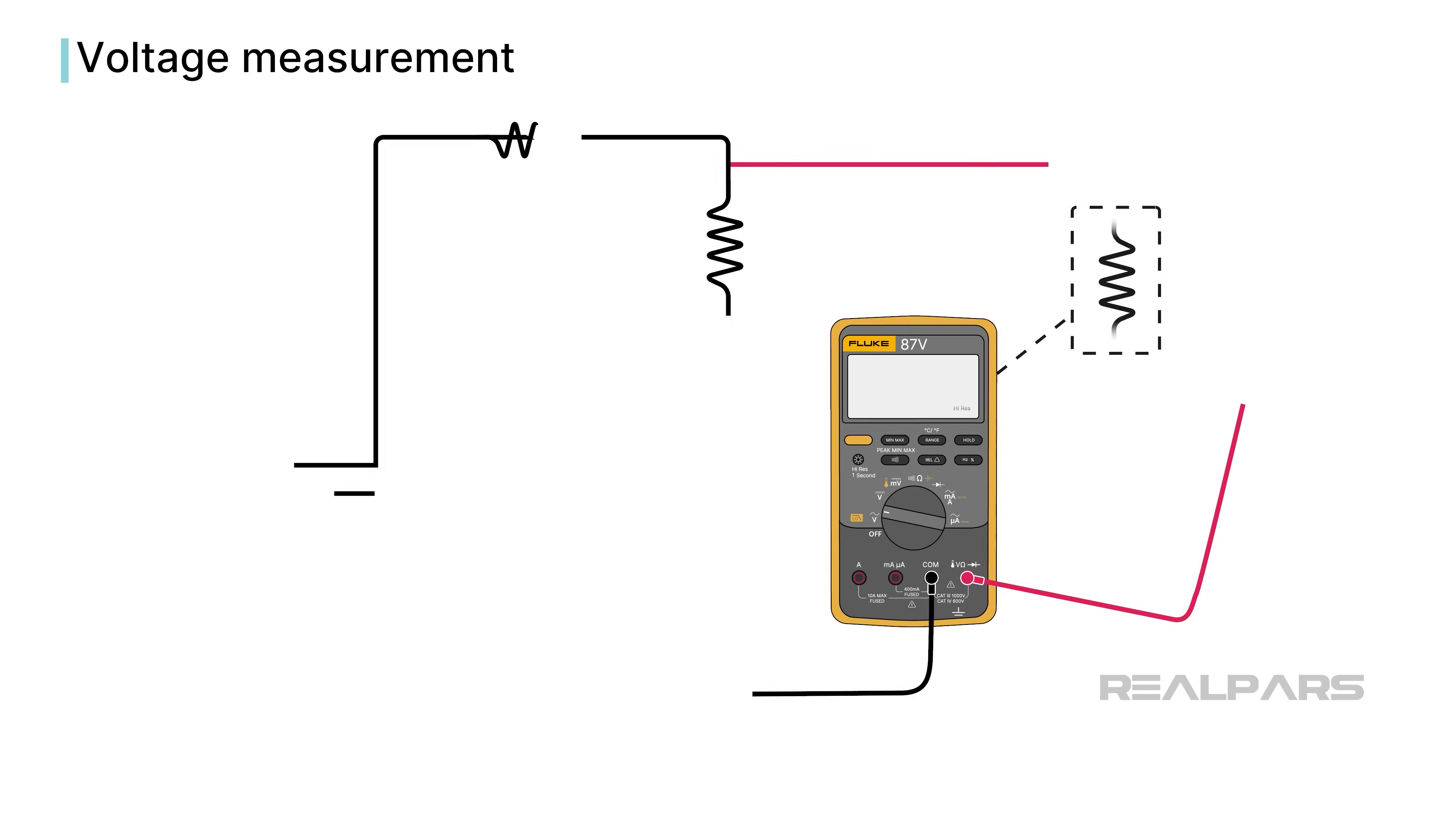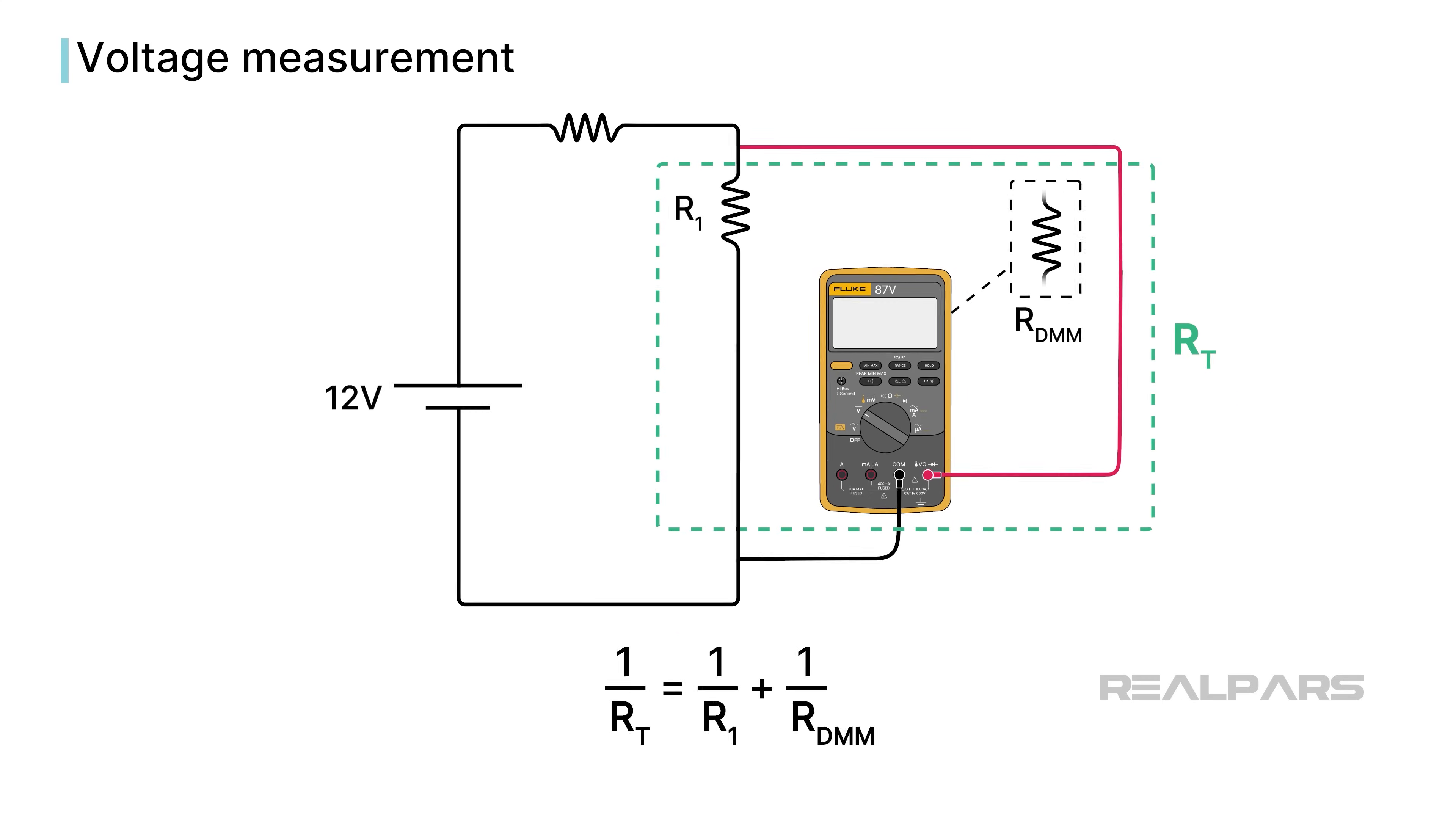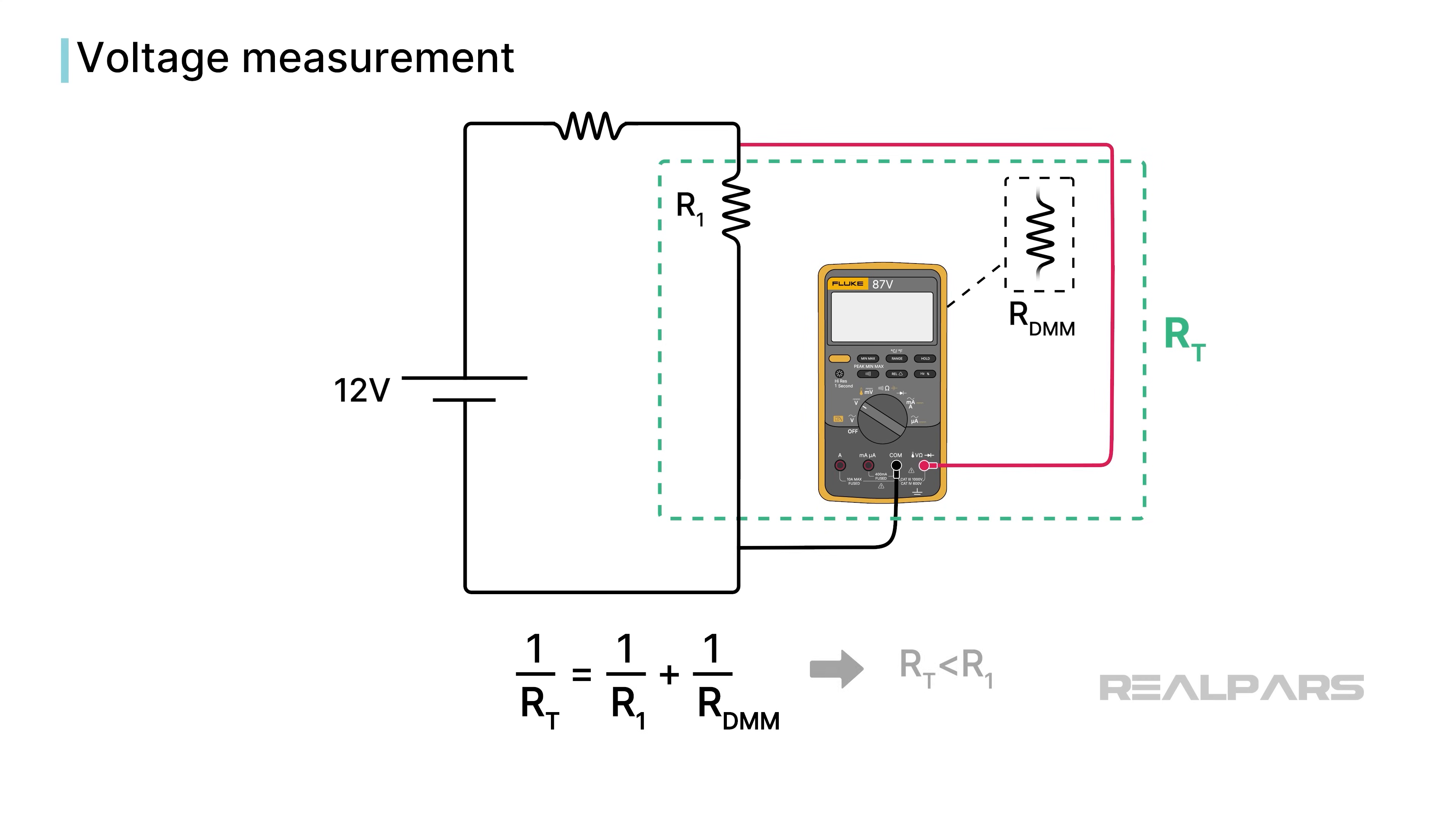Voltage measurements are always taken with the meter connected to the voltage you are attempting to measure. This presents a potential problem. Basic circuit theory tells us that the total resistance of parallel components is always less than the lowest resistance component. A voltmeter should have very high resistance so as not to change the resistance of the circuit under test when placed in parallel across a component.